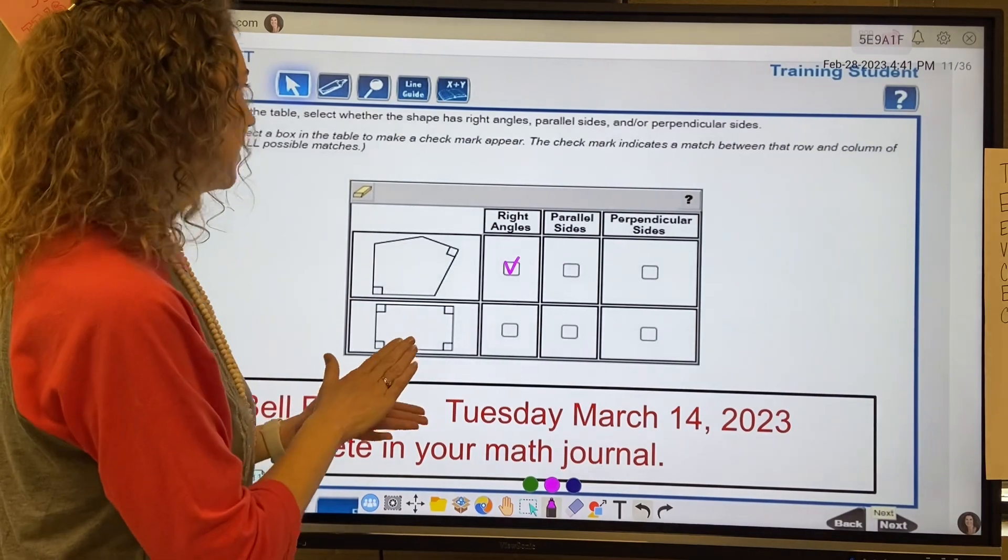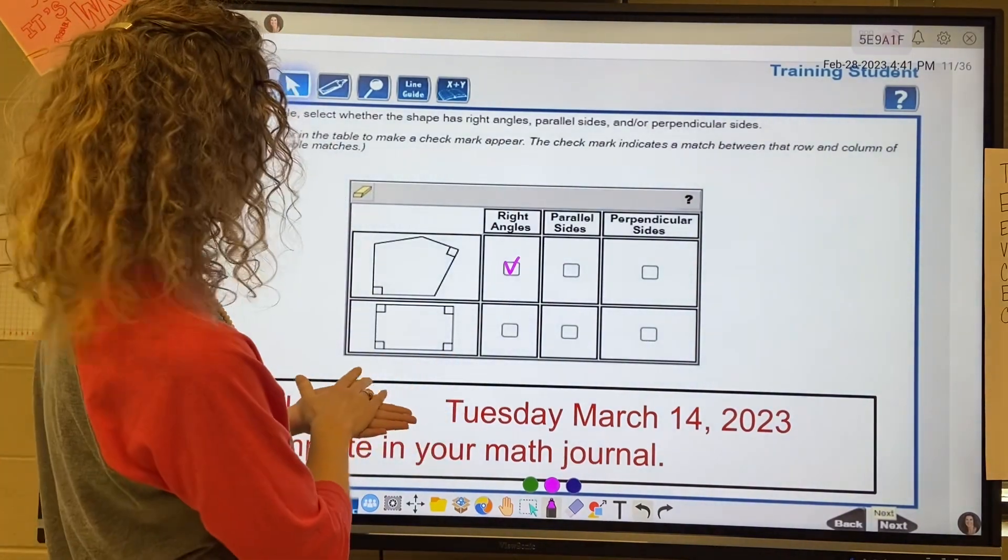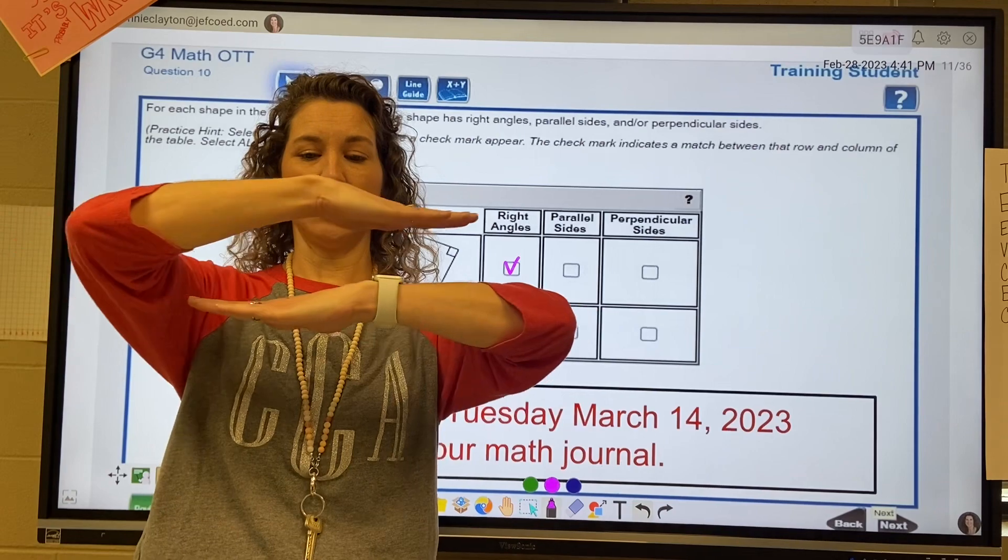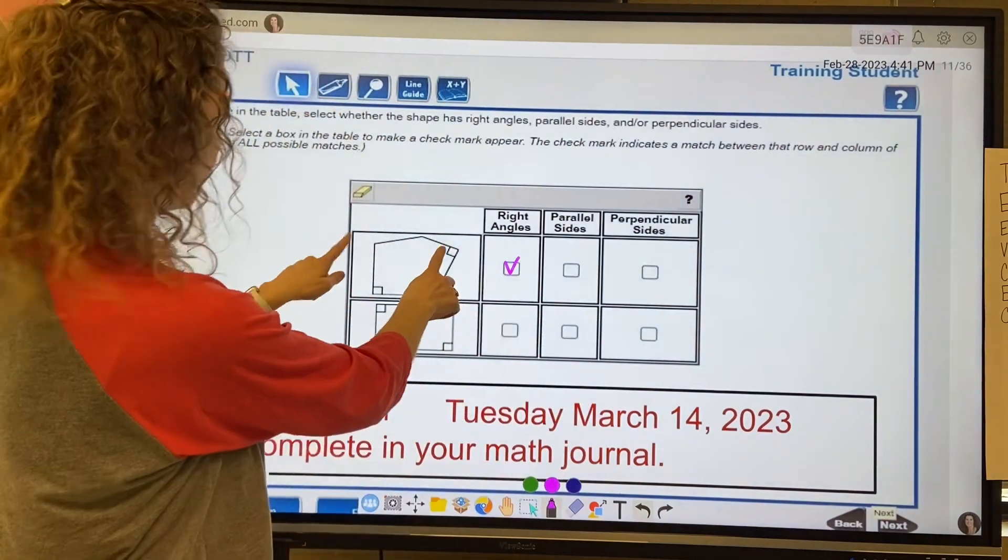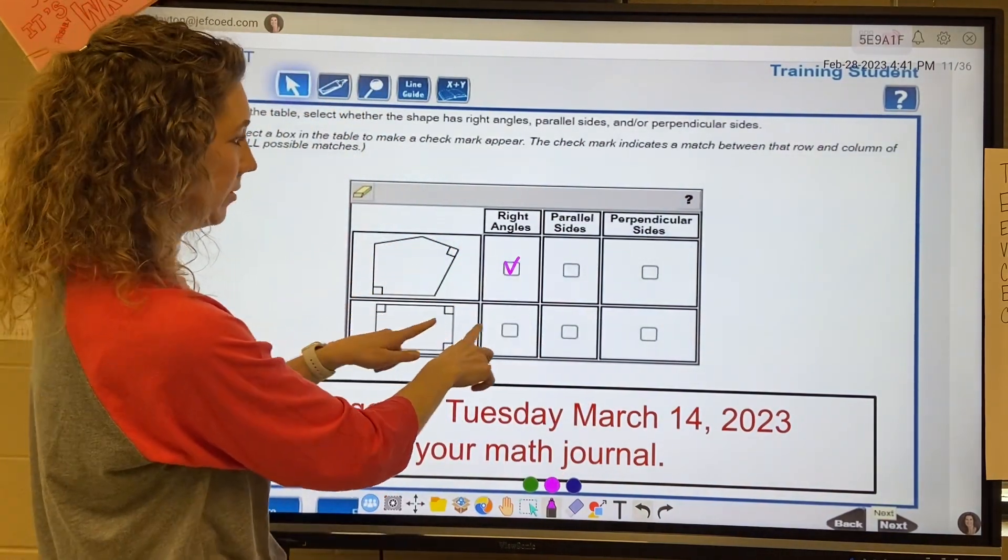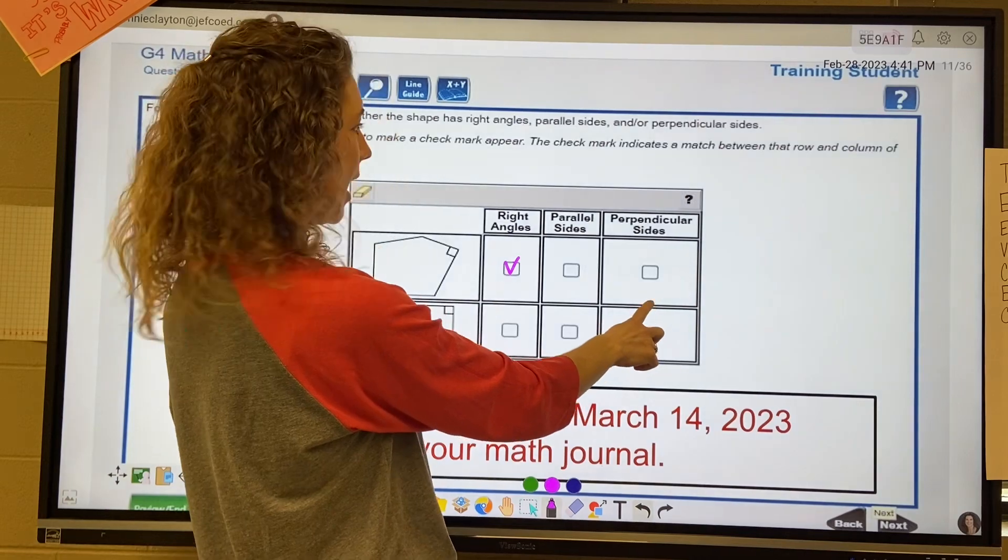Does it have parallel sides? Parallel means they don't intersect, they go on forever and ever. I do not see any parallel sides here, so I'm not going to check that one. Does it have perpendicular sides? Yes, because there is a right angle.